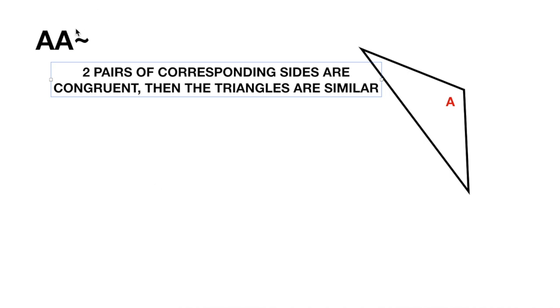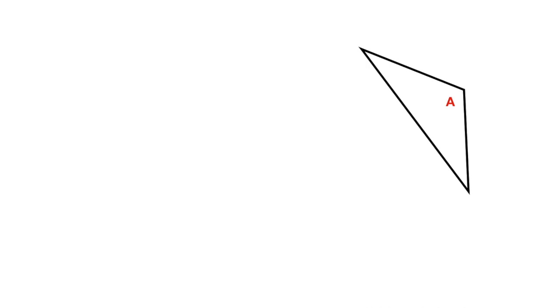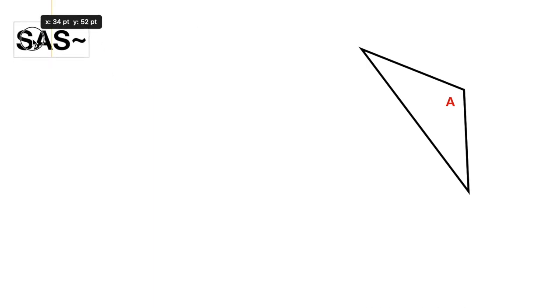The third way to prove that two triangles are similar is by SAS similarity — that's side-angle-side similarity. Let me show you what that means.